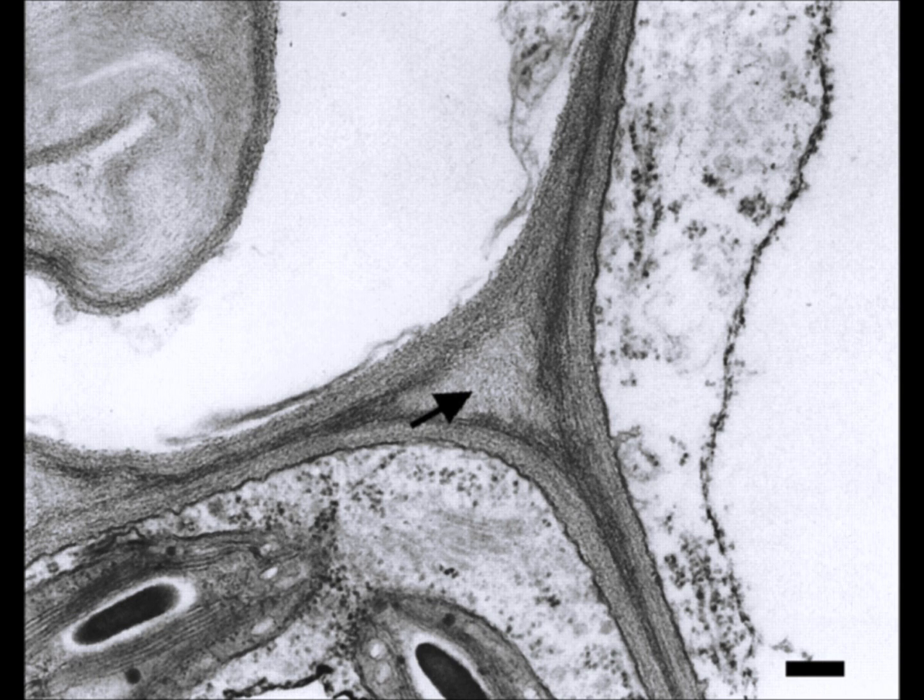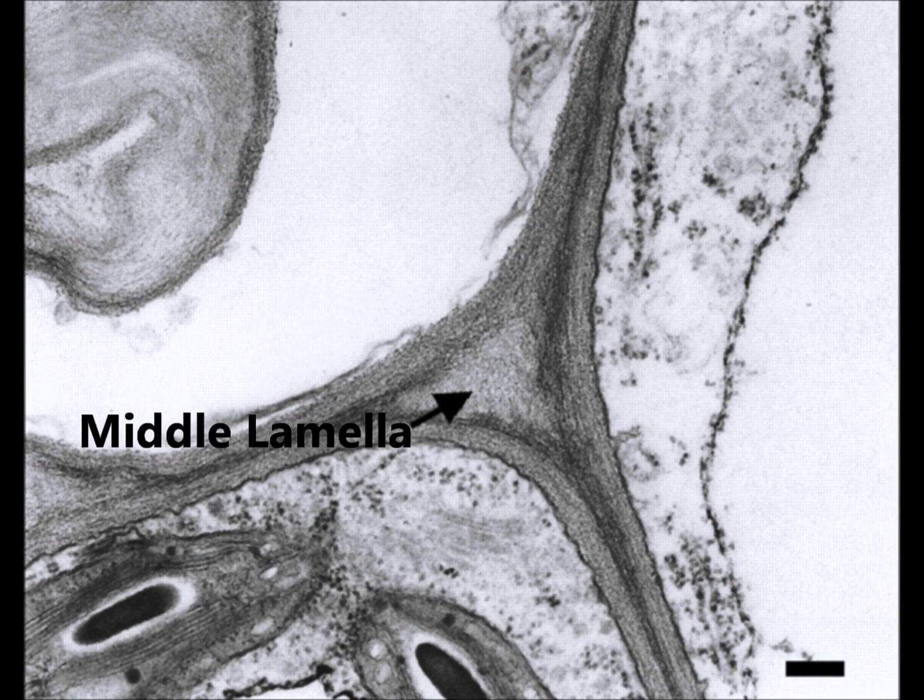The arrow in this picture is pointing to the middle lamella. It is a pectin layer which cements the cell walls of two adjoining cells together. Plants need this to give them stability and so that they can form the Plasma Desmata between the cells. It is the first formed layer which is deposited at the time of cytokinesis.